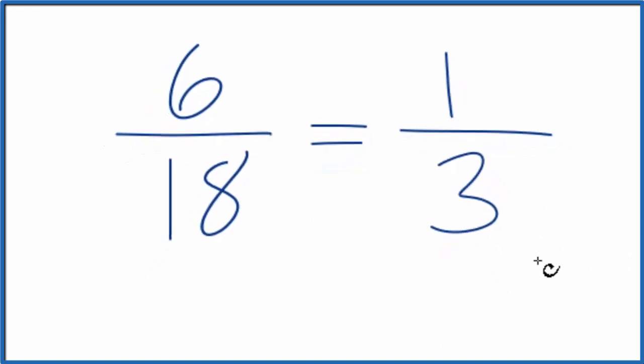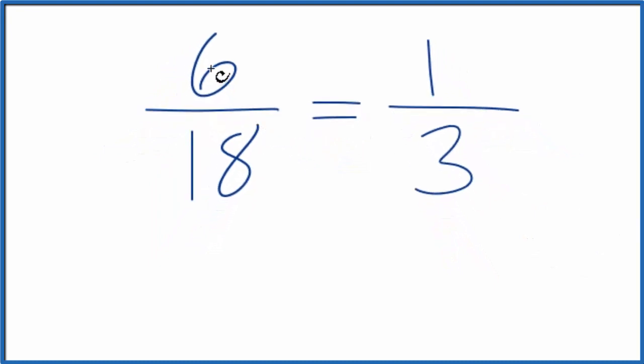We could check this by looking at the decimal. So if you put in your calculator 6 divided by 18, you'd find that you get 0.333. Those threes repeat. So let's just put a bar over that. Divide one by three, you get 0.333. So we'll call it this.